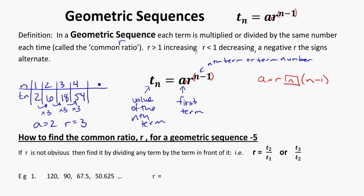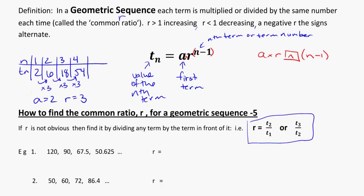So, a bit of a hint for you guys, if it's not obvious what the r value is, you've got to be able to figure it out. And sometimes the numbers are small decimals and things, so this is your little formula here to use. You always want to take any term and divide it by the term in front of it. So, if you have two consecutive terms, you need to divide it by the term in front of it.